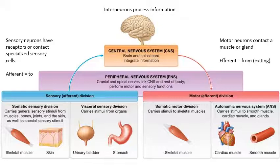The central nervous system will integrate that information, interpret it, and decide what's to be done about it. The central nervous system will then issue motor commands that travel out in the motor division of the peripheral nervous system, ultimately going to your muscles and glands so that you can respond to your environment.